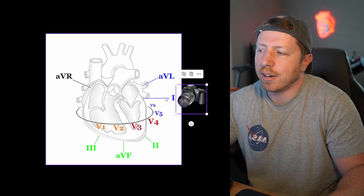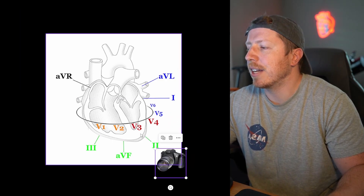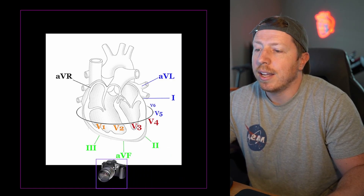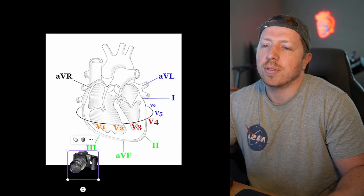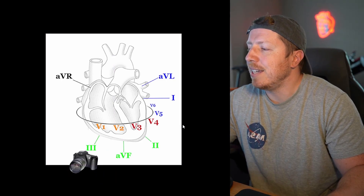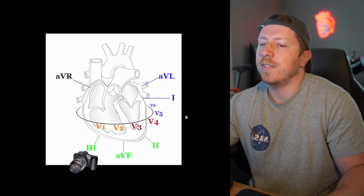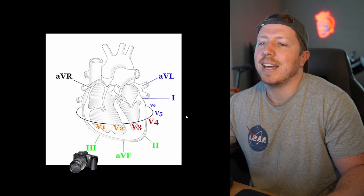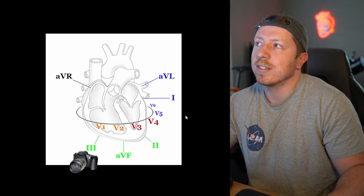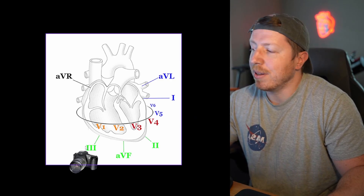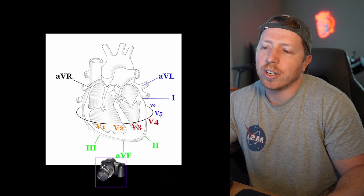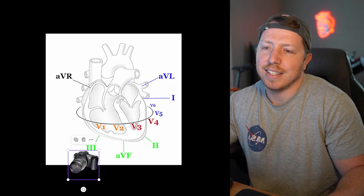Lead I is looking in on the left or lateral side of the heart. Lead II is looking up at the apex or the inferior portion. Lead III is looking at the inferior portion over by the right side. You can see how these leads give us different views of the heart. If we're seeing a STEMI in one of these leads, it leads us to the assumption of where that STEMI is actually happening, because we're looking at it through our lead and seeing that ST elevation.